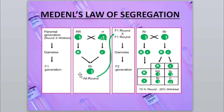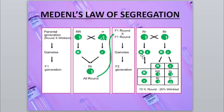When the F1 generation (Rr) undergoes self-fertilization, genes again separate: capital R and small r from each parent. Gametes are formed, and when male and female parents reunite, the resulting offspring again gets genes in pairs, forming the F2 generation. We get: capital R with capital R, capital R with small r, small r with capital R, and small r with small r.